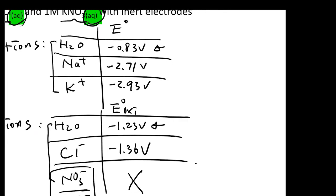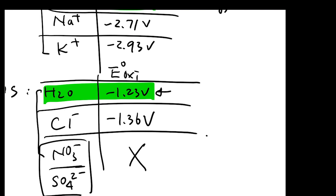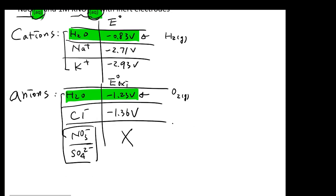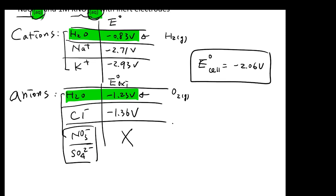Since water has the less negative oxidation potential (-1.23 V vs. -1.36 V for Cl-), water will undergo oxidation and produce O2 gas at the anode. The E° cell is the sum of -0.83 and -1.23, giving -2.06 volts. So you need to apply 2.06 volts to drive the reduction of H2O to produce H2 and the oxidation of H2O to produce O2.